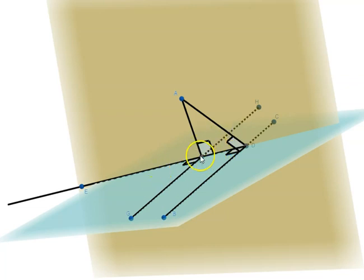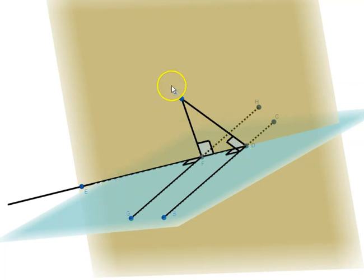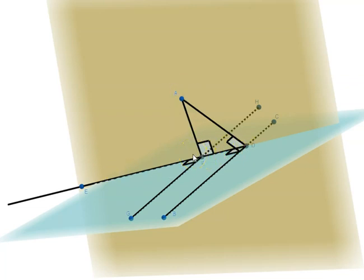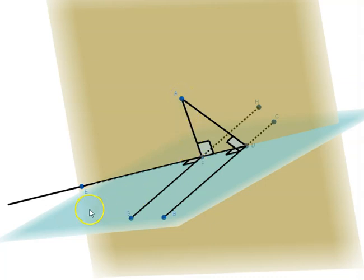GH will be perpendicular to all the straight lines which meet it and are in the plane through AD and DE. The lines meeting GH in that plane are ED and AF. So that means GH is perpendicular to both DE and AF. Therefore AF is perpendicular to GH and DE, which means AF is perpendicular to the plane through GH and DE. That plane is our plane of reference. So that is how we draw a line perpendicular to a given plane from a given elevated point.